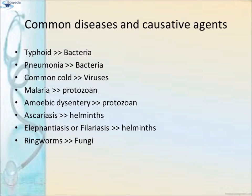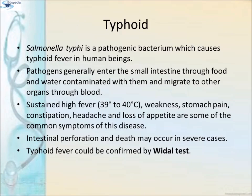Common diseases and causative agents: These are some examples of common diseases seen in humans and their causative agents. Typhoid and pneumonia are caused by bacterial infection, common cold by virus, malaria and amoebic dysentery by protozoans, Ascariasis by helminths, elephantiasis or filariasis also by helminths, and ringworm by fungi.